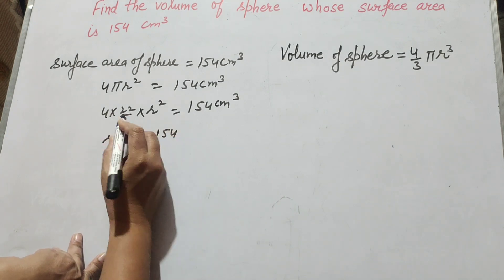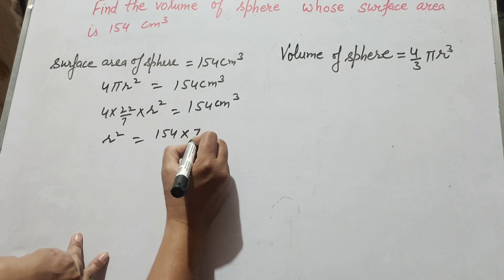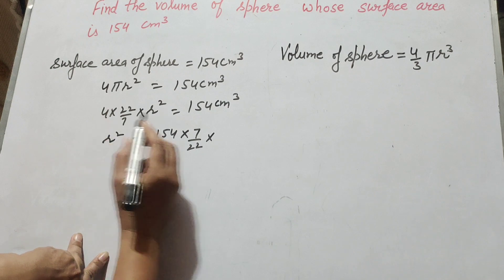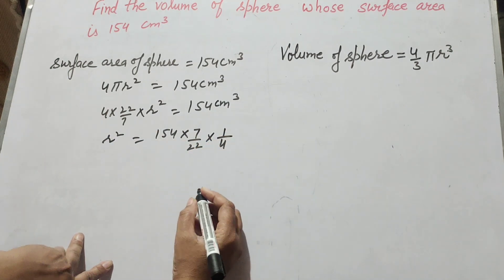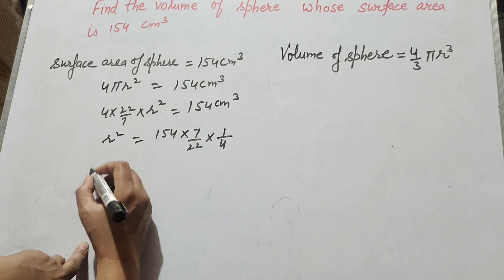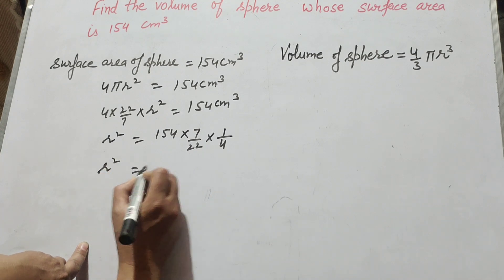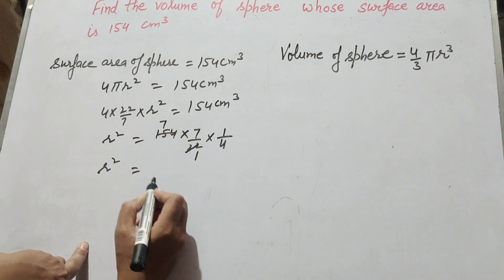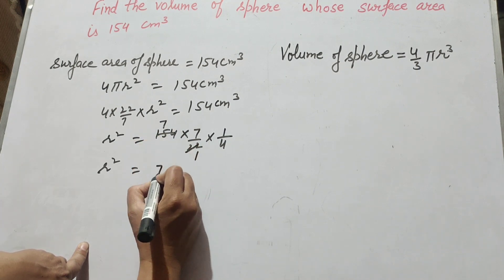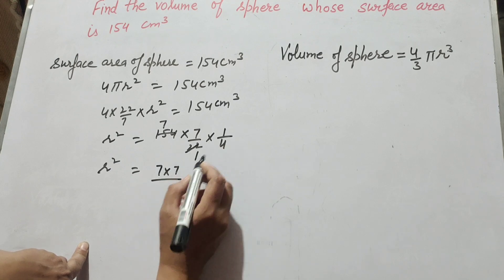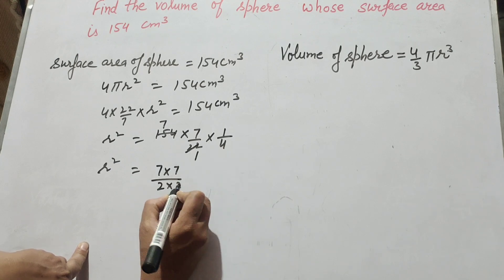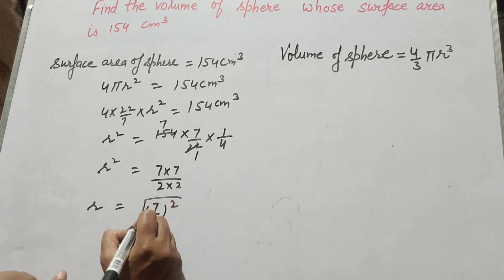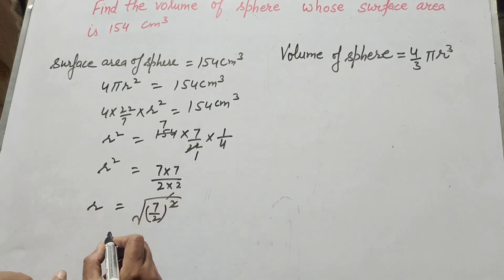Now r square equals 154 times 7 over 22 times 1 over 4, transposing both to the right-hand side by multiplying their reciprocals. So r square equals 154 divided by 22, which gives 7, then 7 multiplied by 7 over 4, written as 7 over 2 squared.